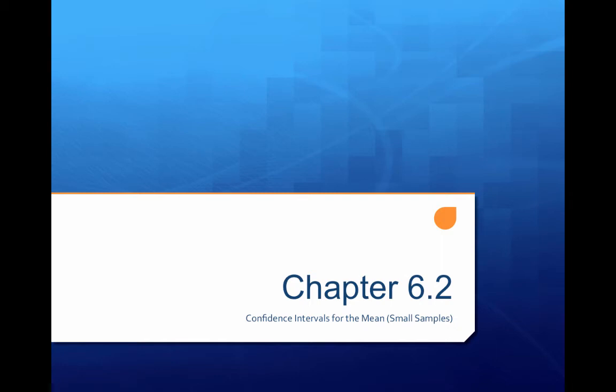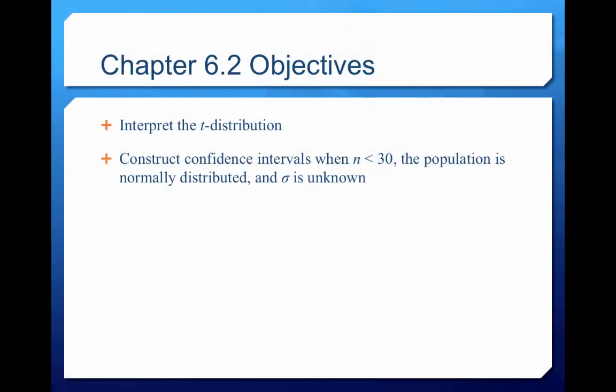Let's finish up the material for exam 2, so this will be the last lecture for the week. Now we want to talk about confidence intervals for the mean when our samples are smaller. In this lecture, we're going to talk about the t-distribution, which is different than the normal distribution. We're going to construct confidence intervals when the sample size is less than 30, but the population is normally distributed and the population standard deviation is unknown.